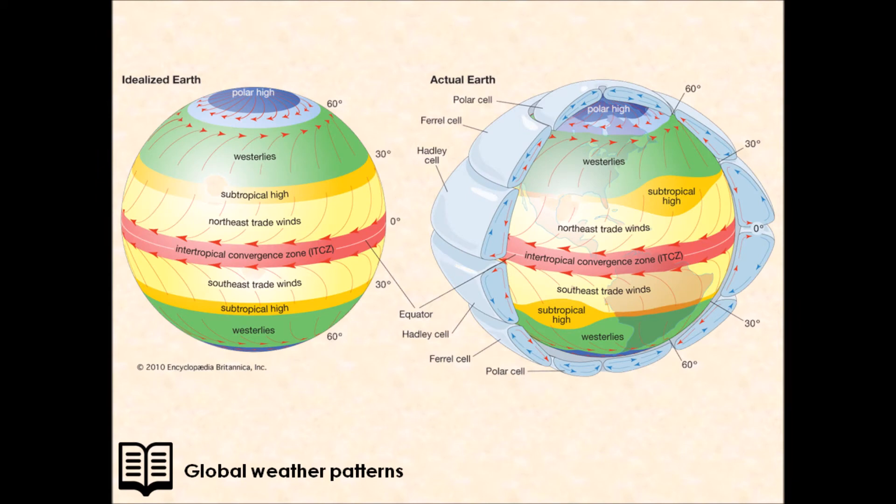The air around the earth moves in circular motions. We call these convection cells. This is caused by the sun heating the earth, and the air by the equator is heated up more than the air towards the poles.